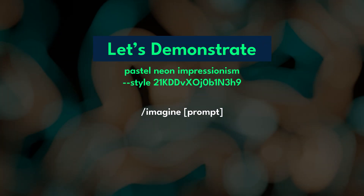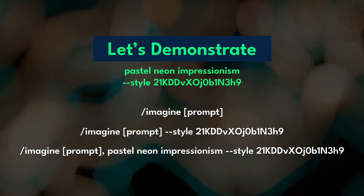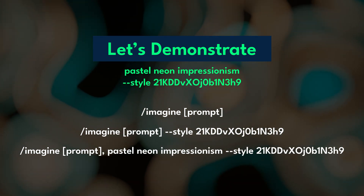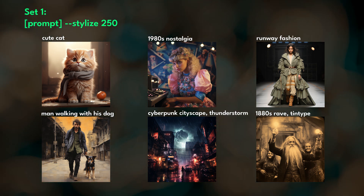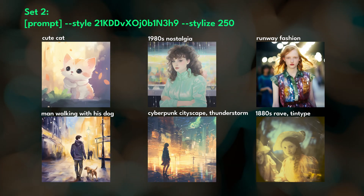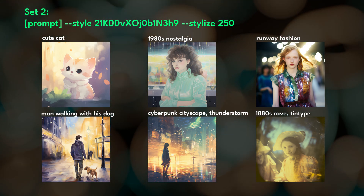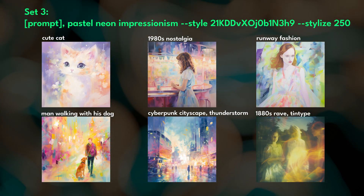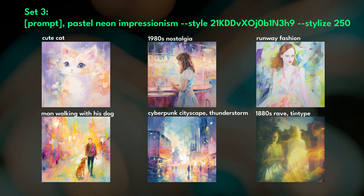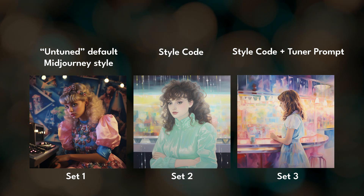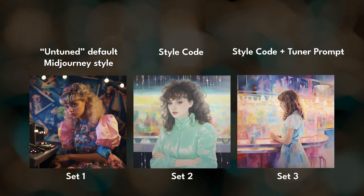Set one will be text prompts without the style code. Set two will be text prompts with the style code. And set three will be text prompts that include the original tuner text and the style code. Here are all of the images generated for set one, set two — now you can start to see the effect that the style code has on those text prompts — and set three. When I included the original tuner prompt text, the images are even closer to the intended style. In some cases, the tuner prompt text is needed as an unlock phrase and including it in your prompt can help push some style codes to full strength.